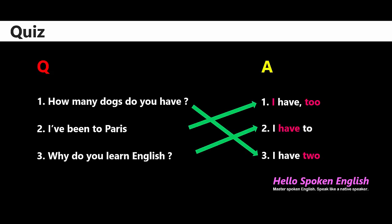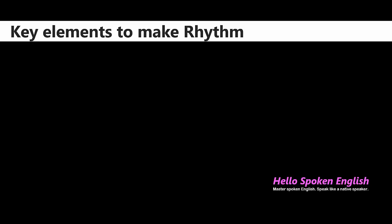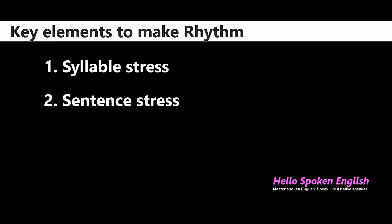When native English speakers speak, they stress some words and don't stress others to deliver what they want to say. That automatically makes the rhythm in English. There are two key elements to make the rhythm: the first one is syllable stress, and the second one is sentence stress. Today we will take a look at the first one.